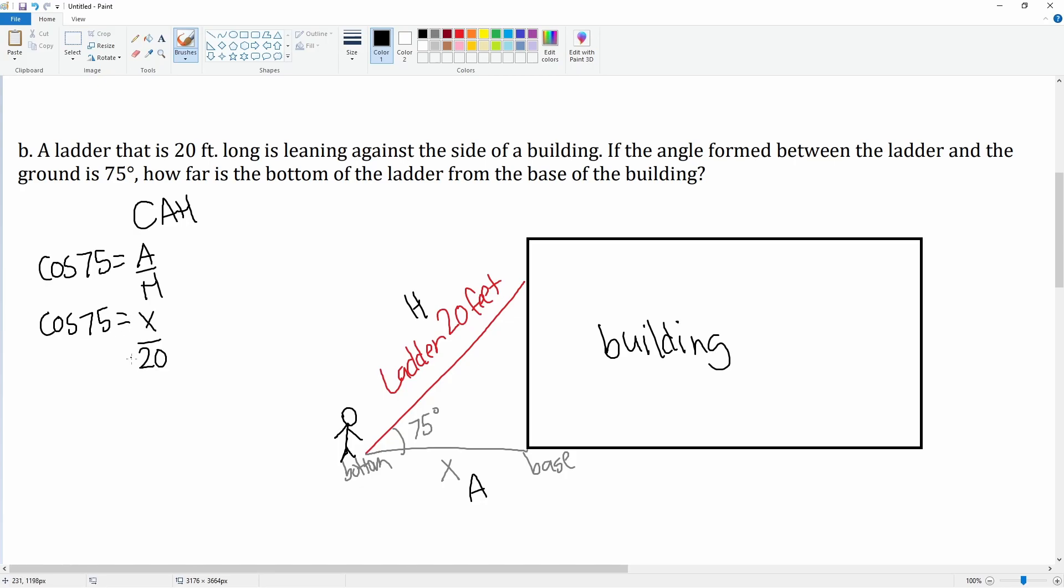We cross multiply to get the x alone, so it's 20 cosine of 75 is equal to x. Plug this into the calculator to get an approximation. So 20 cosine 75, it is 5.2, and the units here is feet. So this distance is about 5.2 feet from the bottom to the base.